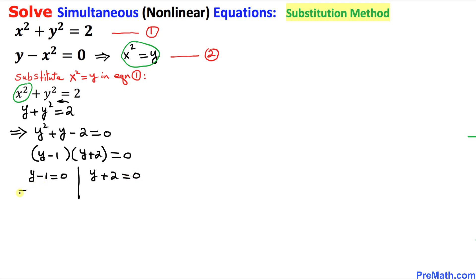That means that y equals to 1 is one of our y value and the other one is going to be y equals to negative 2. So we got two y values.